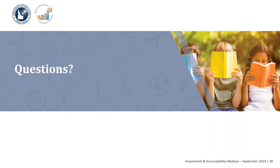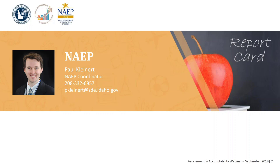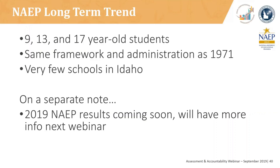Now for a NAEP update. This is Paul Kleiner, your NAEP coordinator. Students around the nation are taking the NAEP long-term trend this year. This test will start in the fall with 13-year-olds taking it, 9-year-olds will take it in the winter, and 17-year-olds will take it in the spring. This will be a paper and pencil assessment, just as it was in 1971, and will test both math and reading. Very few schools in Idaho will take this test, and the 2019 NAEP results are coming soon — log into the next webinar for more information.